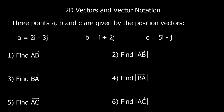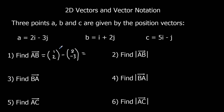Now we've got points given by position vectors. A is at position (2,-3), B is at (1,2), and C is at (5,-1). To find vector A to B, we do B take away A. So the position of B is (1,2), take away position of A which is (2,-3). For the i's: 1 take away 2 is -1. For the j's: 2 take away negative 3 is 5. So A to B is minus i plus 5j.